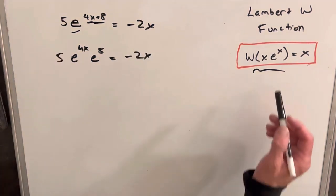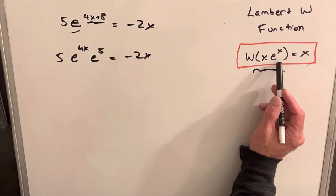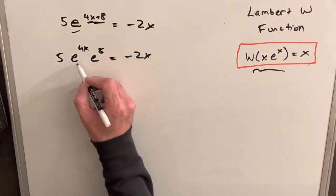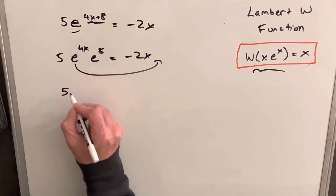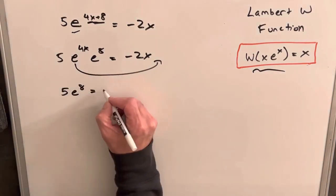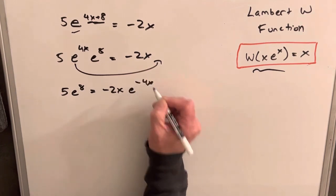Because we know that we want x e to the x, we want our x's around the e, let's bring our e over this way. So we'll divide both sides by e to the 4x, and we're going to have on the left 5 e to the 8 equals minus 2x e to the minus 4x.